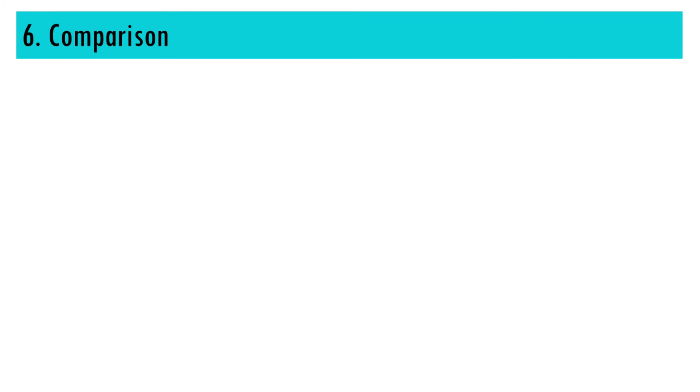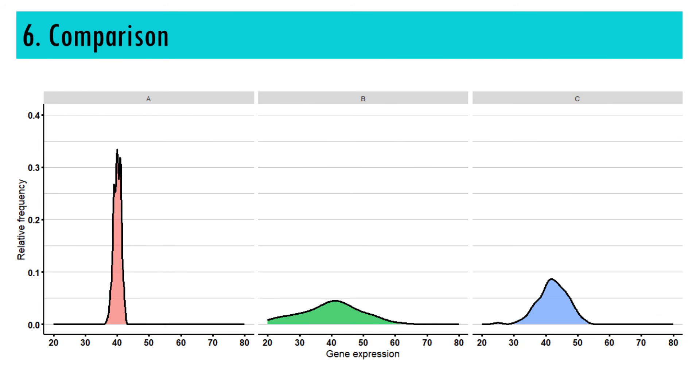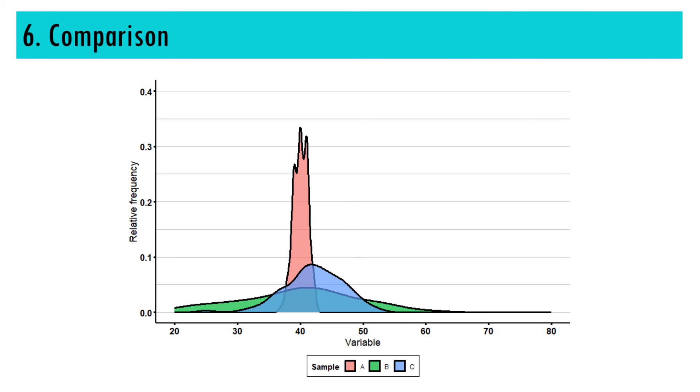Okay, and lastly, number six, comparison. Density curves can also be used to compare distributions between different groups or conditions. By overlaying multiple density curves on the same plot, you can visually check for differences in shape, central tendency, and variability between groups.